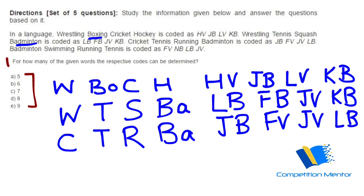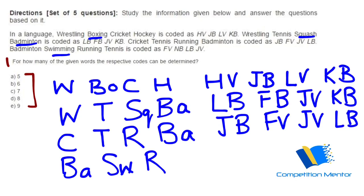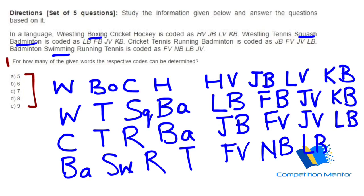Now you have Badminton, Swimming — note that the previous set had Squash and this one has Swimming — and Running and Tennis, coded as FV, NB, LV, and JB. Write this quickly; do not waste time writing the whole words. Then you can move on to solving using the common elements.